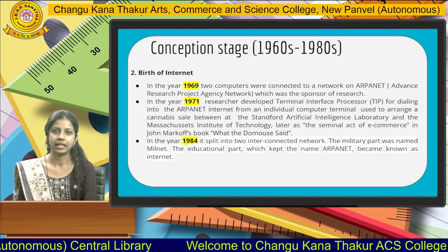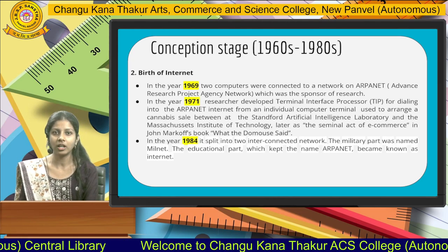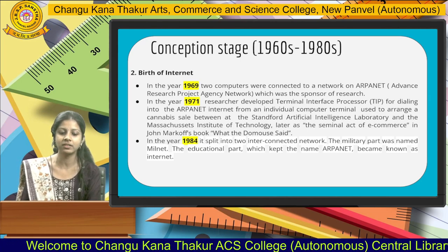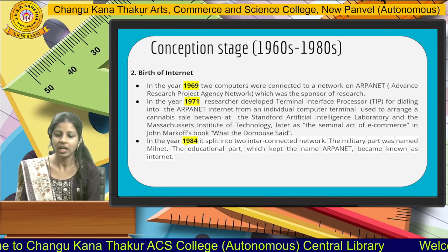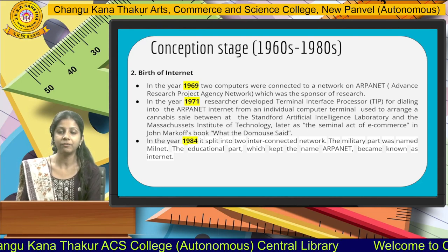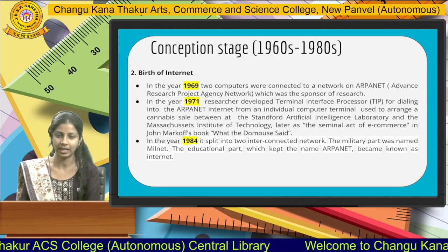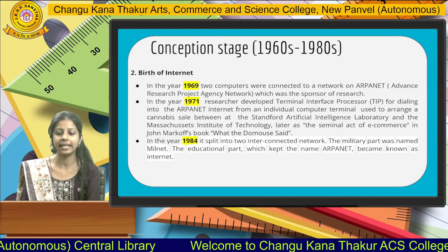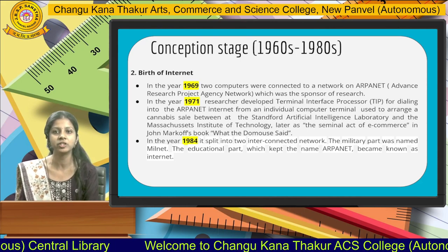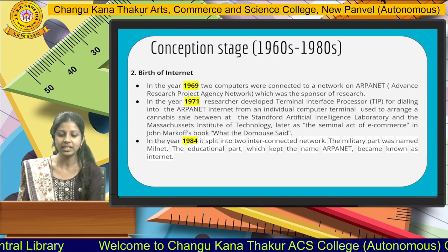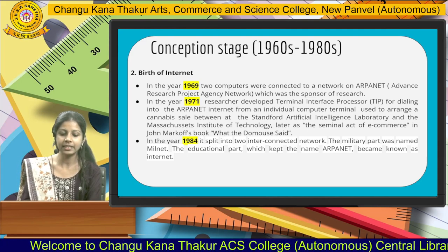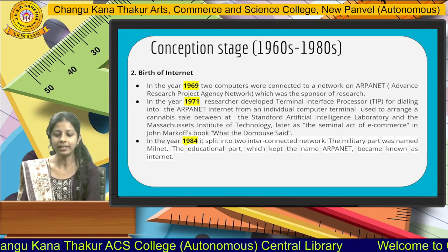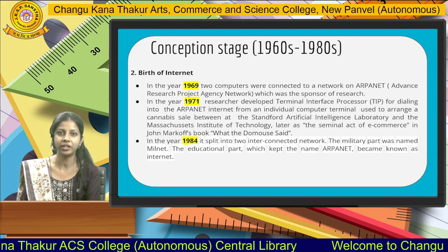Then we have the birth of the internet. Research scholars conducted the ARPANET project — that is, the Advanced Research Project Agency Network — through which two computers were connected and data was passed, giving rise to the birth of the internet. Then in the year 1979, a TIP — that is, Terminal Interference Processor — was used to pass information. In the year 1984, two interconnected networks were connected and ARPANET, marking the birth of the internet, was propounded.